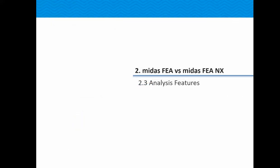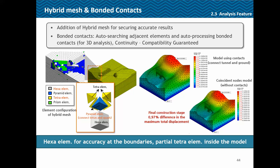With FEA NX we have introduced the hierarchy mesh and boundary contacts. In an example using contact with incompatible meshes connected via contact option, versus a model with coincident nodes between different mesh sets, the difference in results was less than 1%.